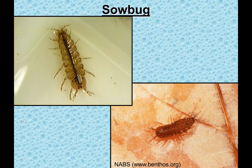Just like scuds, sowbugs — also called roly pollies or pill bugs — are found in limestone or hard water spring-fed streams. You may have encountered their terrestrial version under logs as a child. The aquatic version is an isopod with a hard exoskeleton that doesn't change into anything. In hard water, spring-fed streams they'll be there alongside the scuds — another excellent protein source for fish — usually found on watercress and other aquatic vegetation.